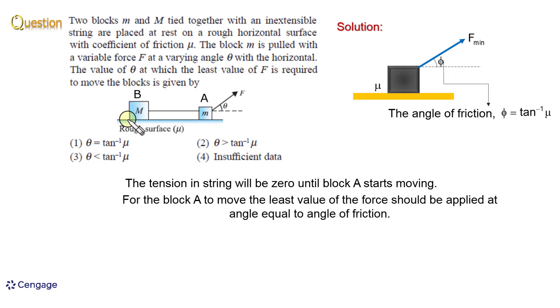That means we can take block A and block B as a system and we can consider force capital F is acting on the system at angle θ. And this angle θ, as we discussed, should be equal to angle of friction. That means θ equals angle of friction, which means option one should be the correct option.